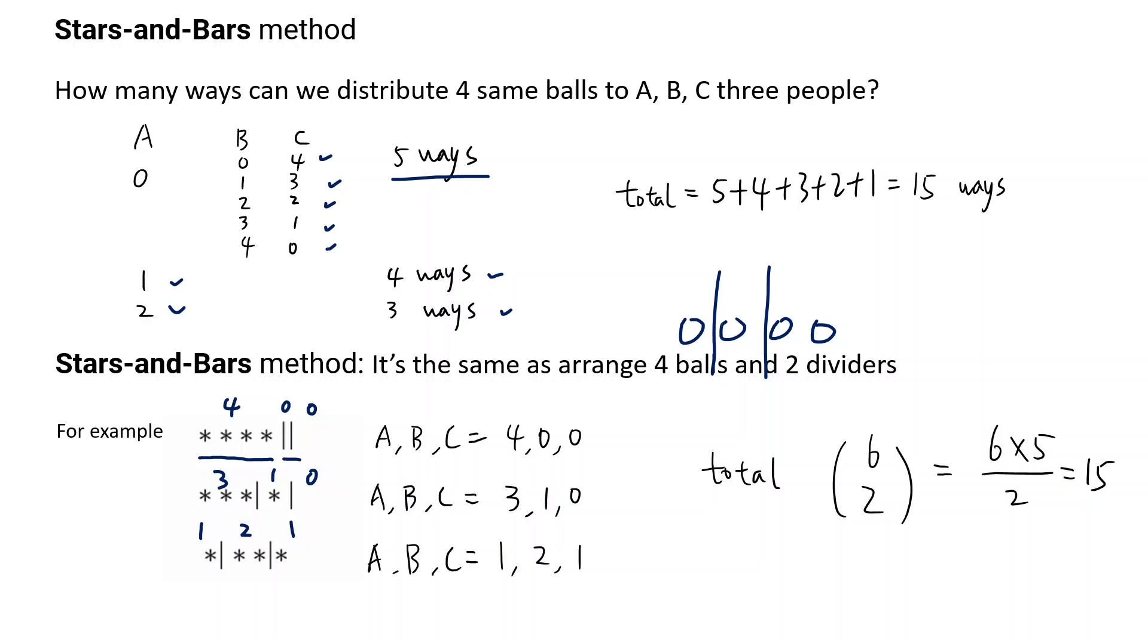Now we can simplify this question into stars and bars, which means we have six objects in total - four stars and two dividers.